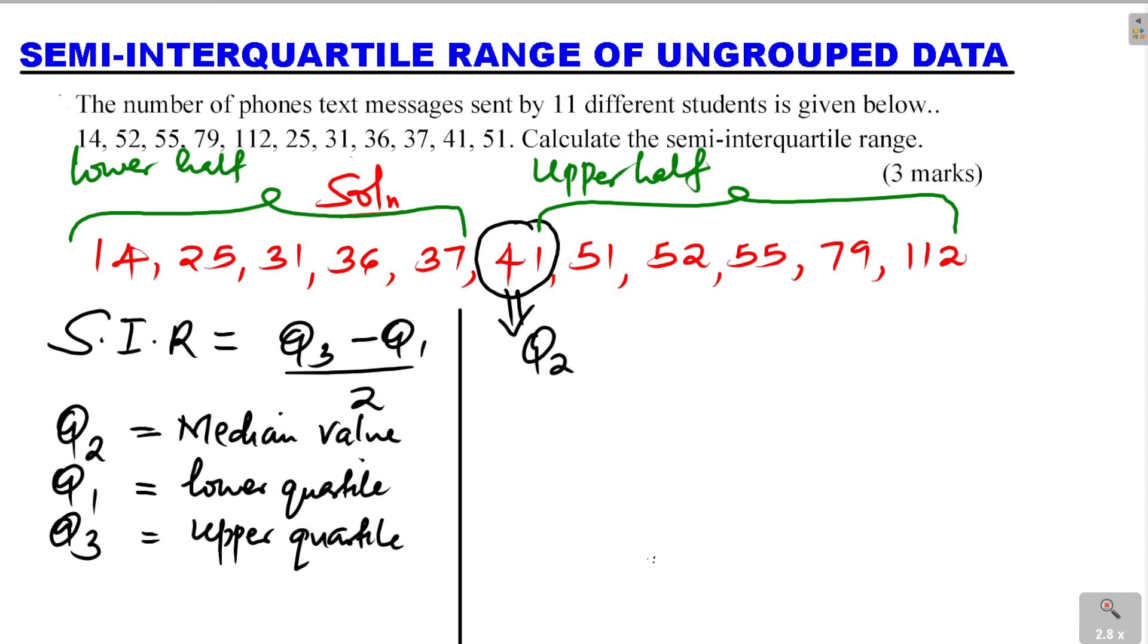Q1 will be obtained by getting the median of the lower half. The lower half has 5 values: 14, 25, 31, 36, and 37. The median of the lower half is 31. So Q1 is 31, the median of the lower half.